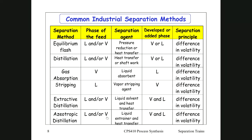Azeotropic distillation is something we'll go into in much more detail later using residue curves, which are a more powerful tool for understanding what is possible in an azeotropic mixture. You can use a mass separating agent to help break an azeotrope, but you can also use a difference in pressure — pressure swing distillation — to break an azeotrope. We'll go into that later.